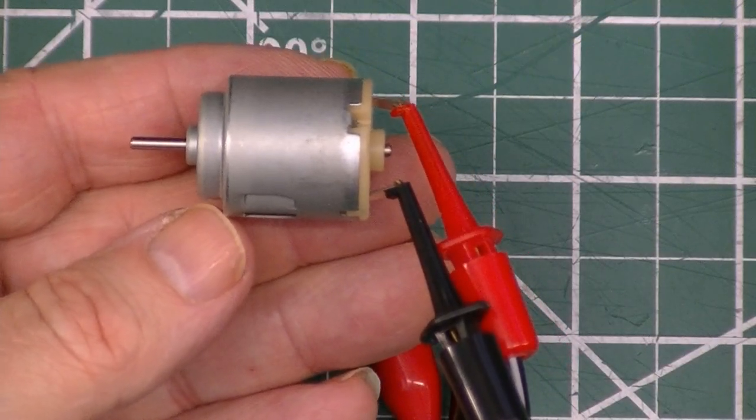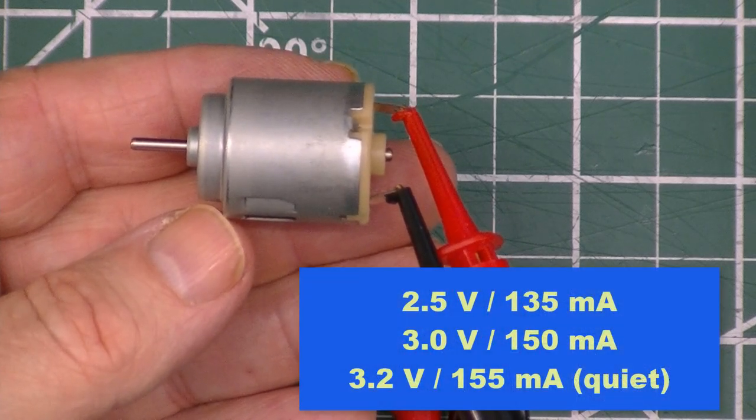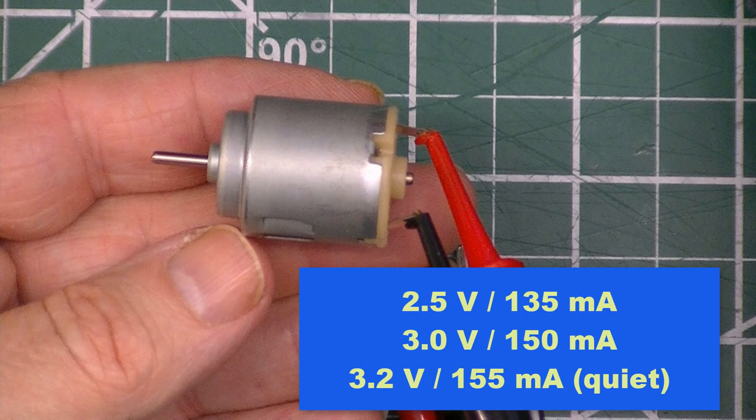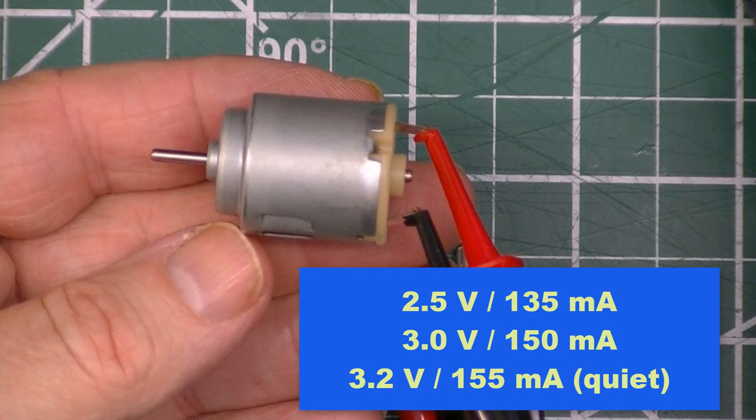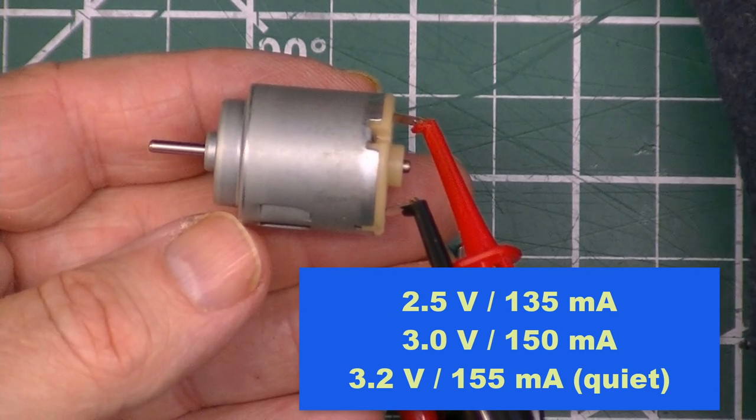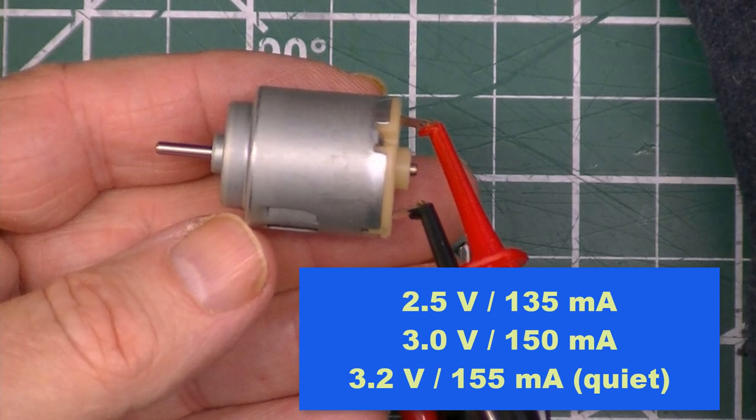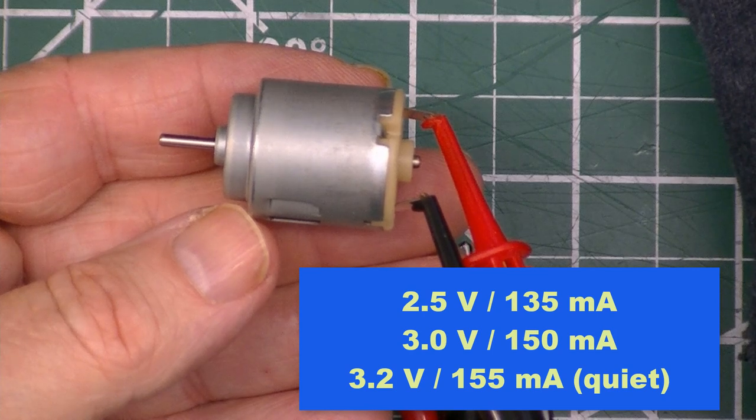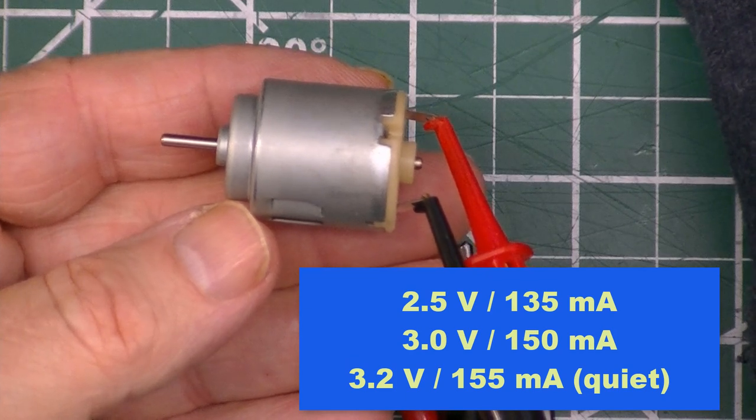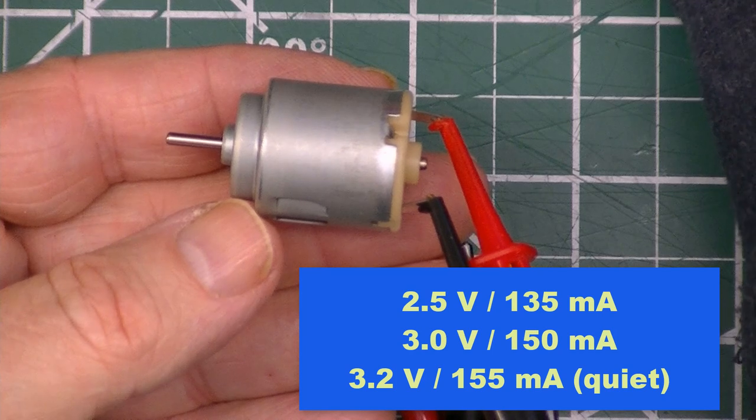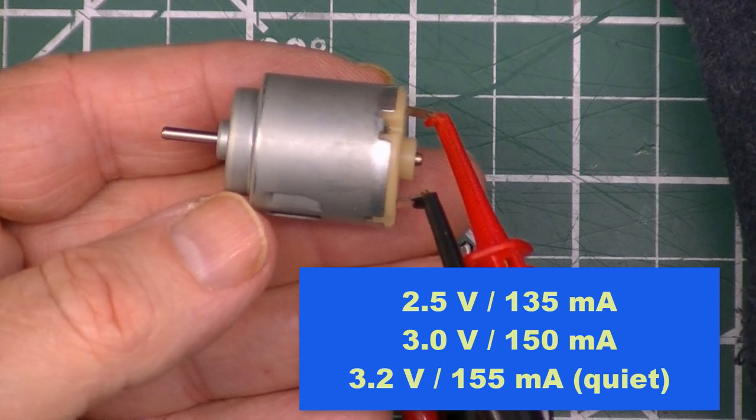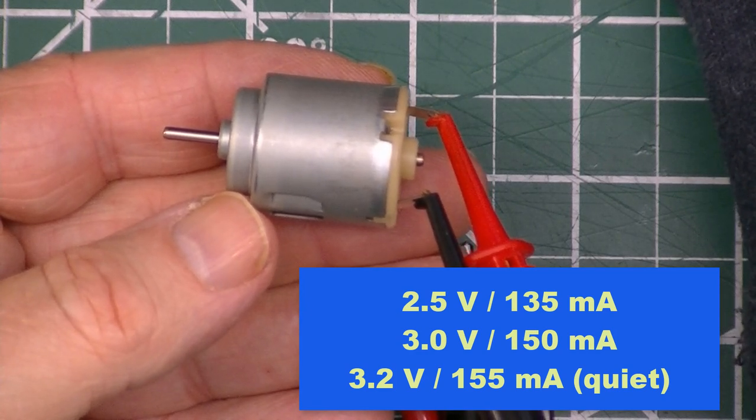This is the R140 motor running at about two and a half volts right now, drawing 135, 140 milliamps. I'm going to bump it up to 3 volts. At 3 volts it's going quicker and it's also taking 150 milliamps now. I'll push it just a little bit more. At 3.2 volts it's drawing 155 milliamps and it's quieted down. Here it is at about 3 volts and you can hear it.